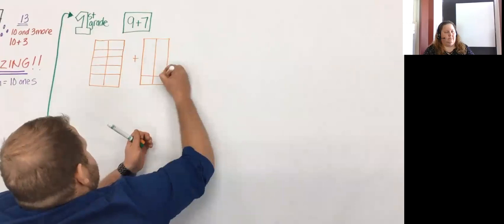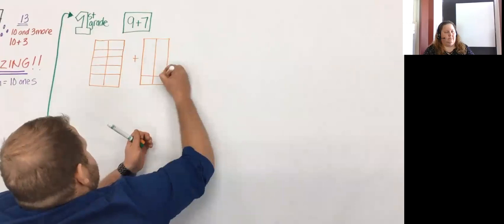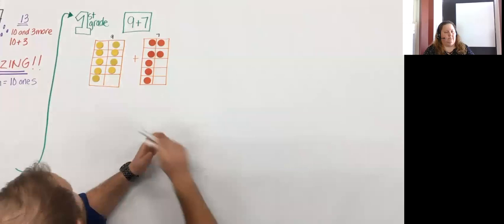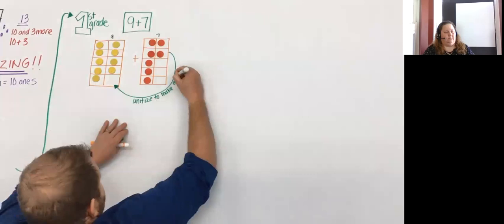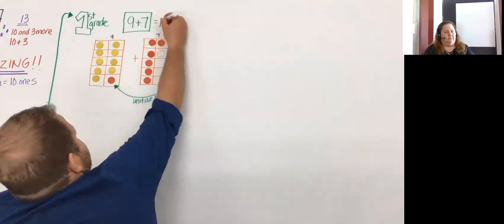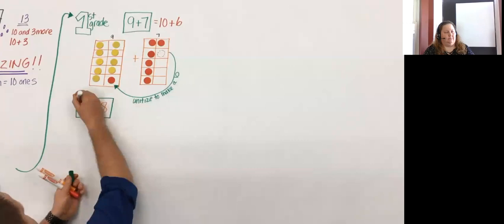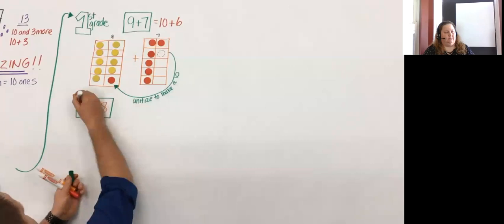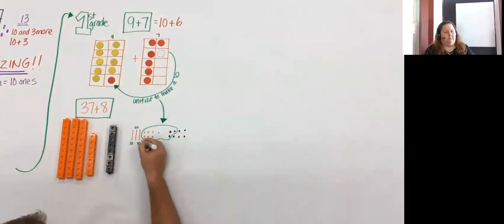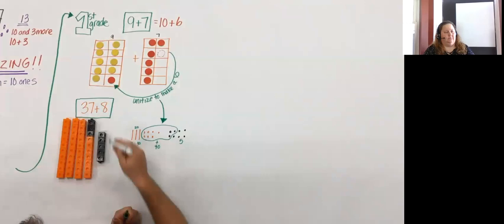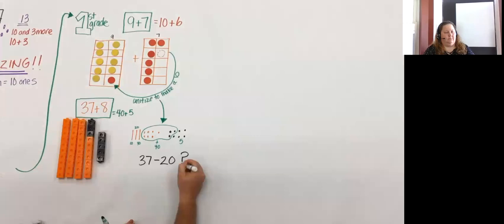As students dive into first grade they begin to explore sums greater than ten. A student can take nine plus seven, model it with a ten frame, and because they've worked on unitizing they know it's most efficient to fill up the ten frame — take one from the seven, give it to the nine to make a ten, and be left with six. Students are beginning to think flexibly about numbers. They decompose eight into a three and a five, give three to the thirty-seven to make forty, and have five more. The same understanding applies to double-digit numbers.